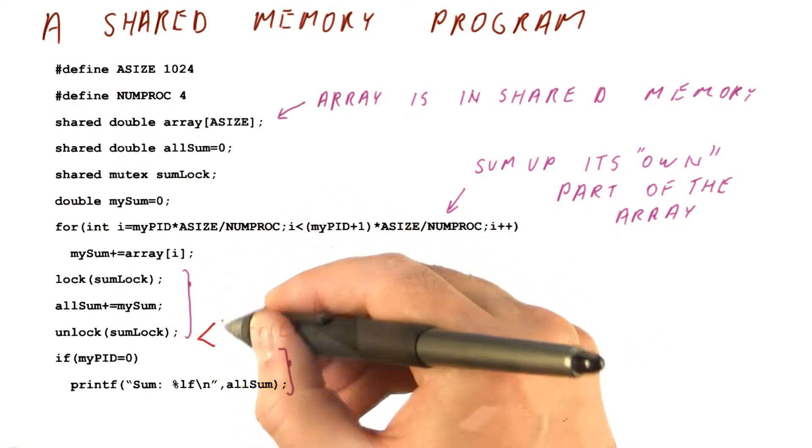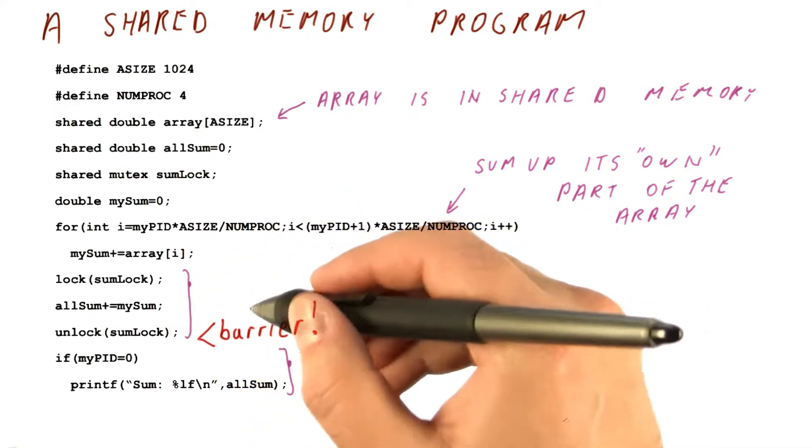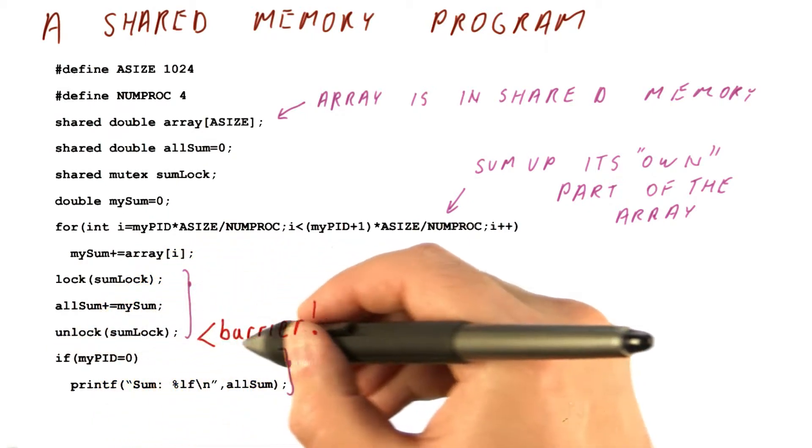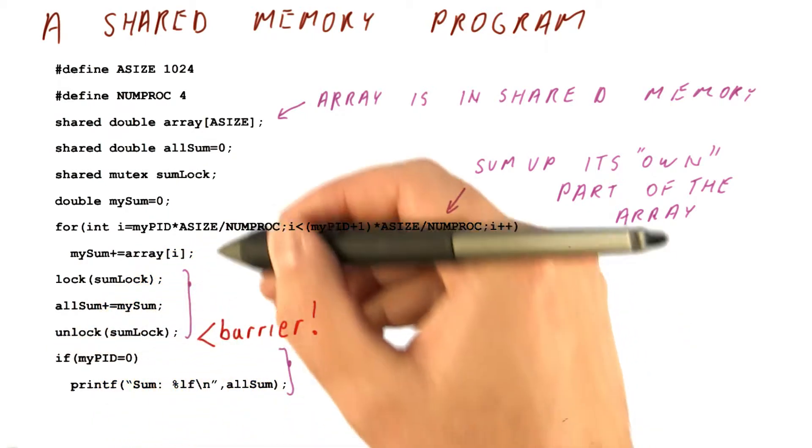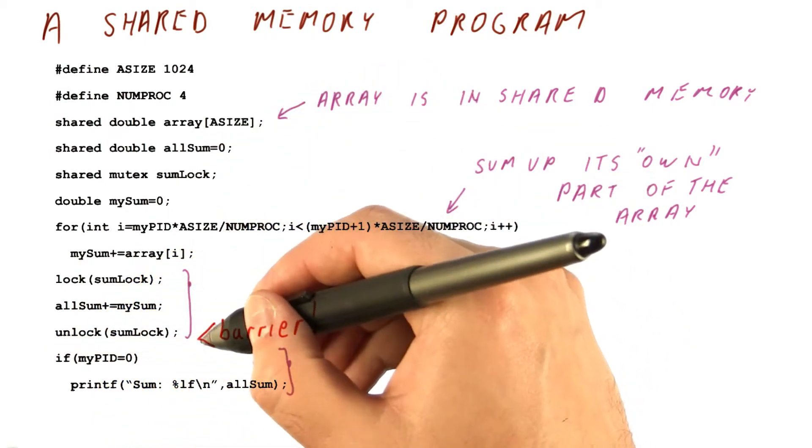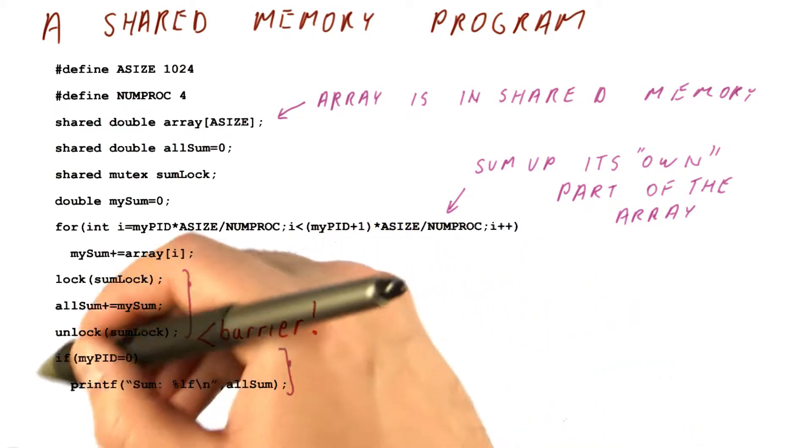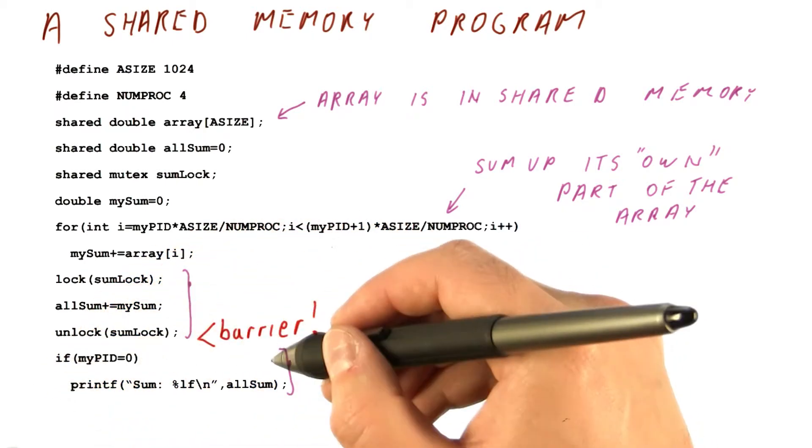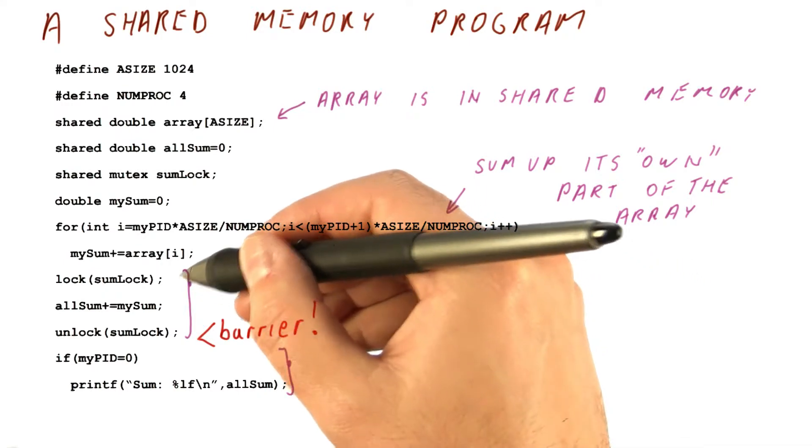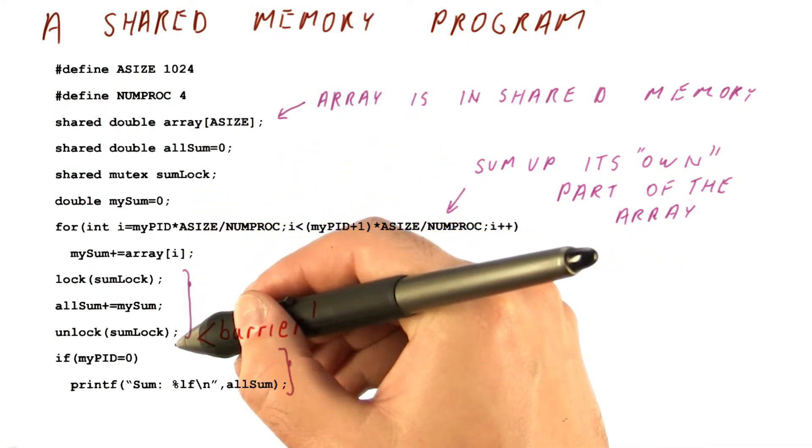So we need to add code here to have what's called a barrier where basically we put a synchronization here that makes all of the cores wait for everybody to arrive before they proceed to ensure that core 0 when it does this, does it only when everybody else has arrived to this point and has incremented the sum already.